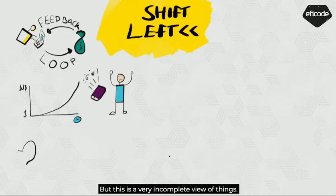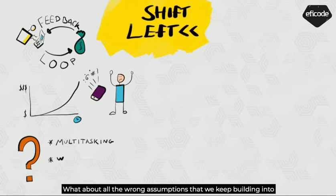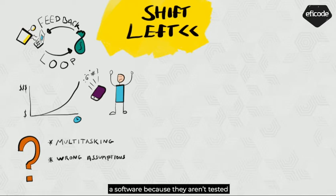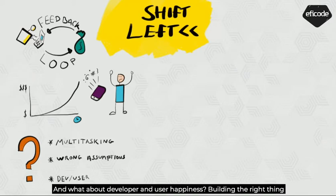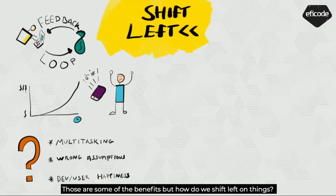But this is a very incomplete view of things. What about the multitasking that is necessary due to delayed feedback? What about all the wrong assumptions that we keep building into our software because they are untested? And what about developer and user happiness? Building the right thing for the user and getting that feedback — those are some of the benefits. But how do we shift left on things?